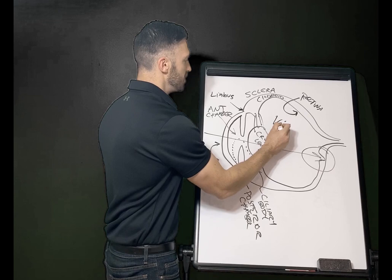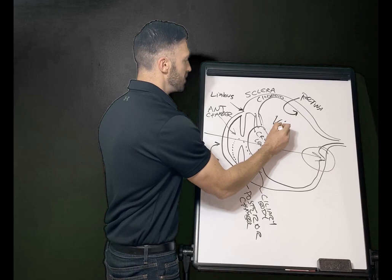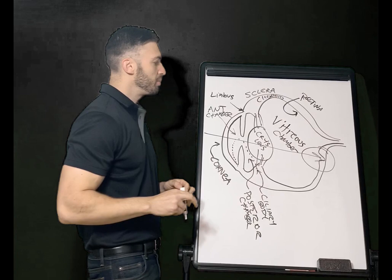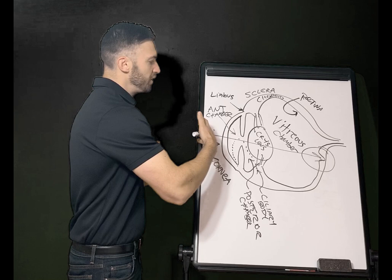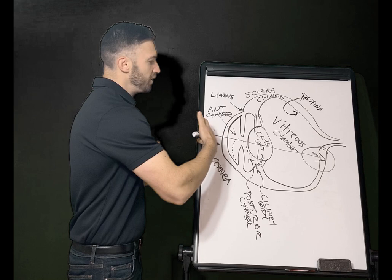Back here in this chamber we have the vitreous chamber, filled with vitreous humor. It pretty much gives the eye its globe shape. It is clear, much like the aqueous fluid, so that when light passes through it's uninhibited.